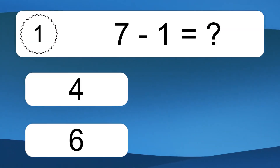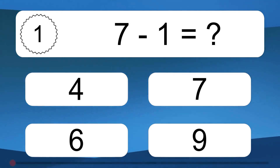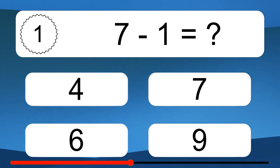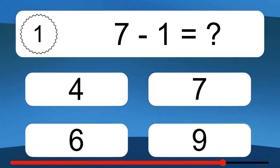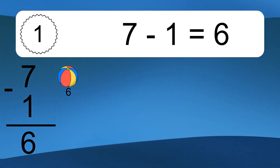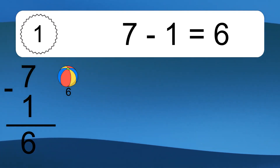7 minus 1 equals what? 7 minus 1 equals 6. Let's count it: 6.